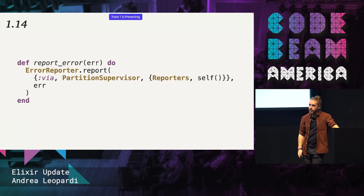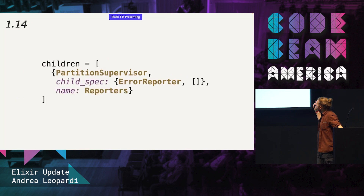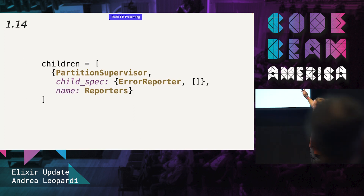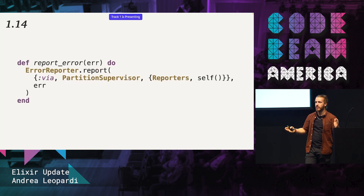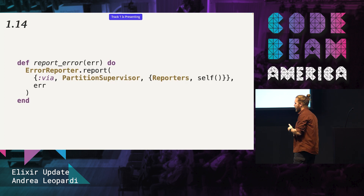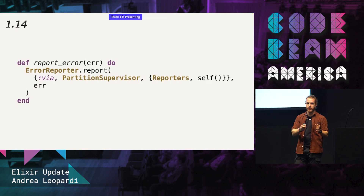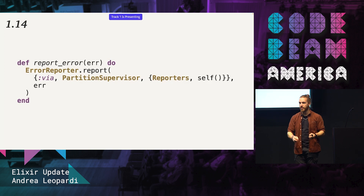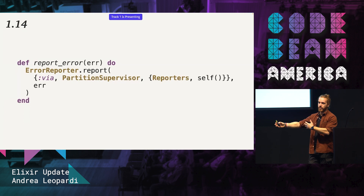Question: how customizable is the routing for partition supervisor? You can customize the hashing function used for routing. But this is meant to be a simple way to partition over a bunch of processes. If you need very custom logic, you'd probably reach for something else. This is an easy-to-access tool in the standard library to take something like registry and parallelize it so it doesn't become a single bottleneck.